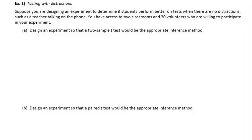So our example, which is about testing with distractions, says suppose you're designing an experiment to determine if students perform better on tests when there are no distractions, such as a teacher talking on the phone. You have access to two classrooms and 30 volunteers who are willing to participate in your experiment. Part A says design an experiment so that two sample T tests would be the appropriate inference method.